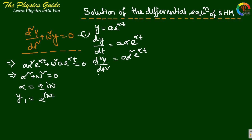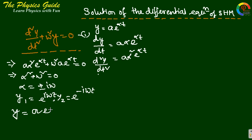There are two solutions: y₁ = e^(iωt) and y₂ = e^(-iωt). The resultant general solution is y = A·e^(iωt) + B·e^(-iωt), where A and B are constants.